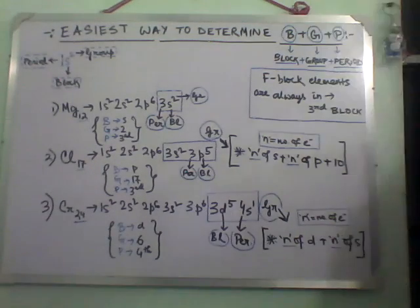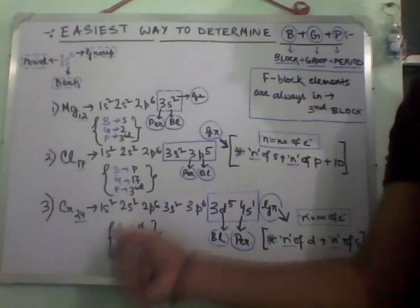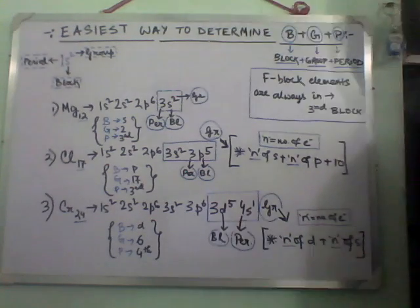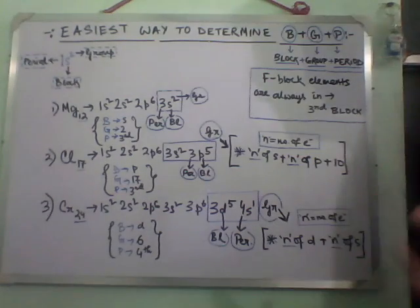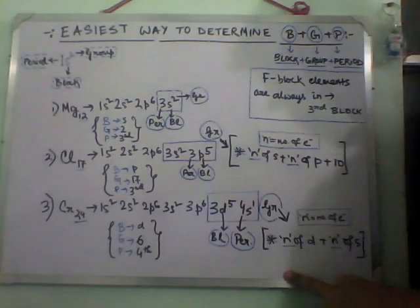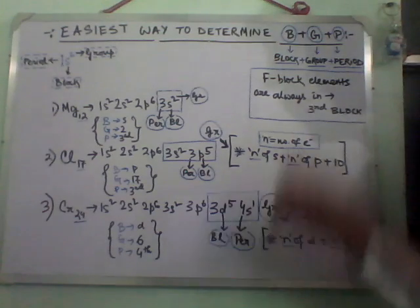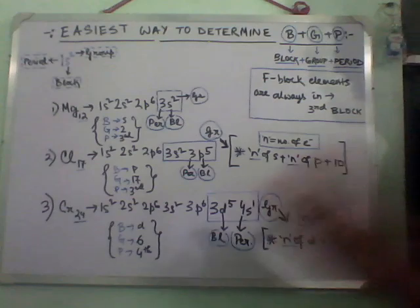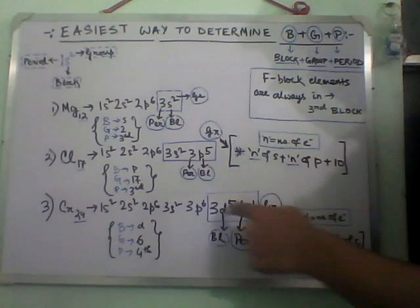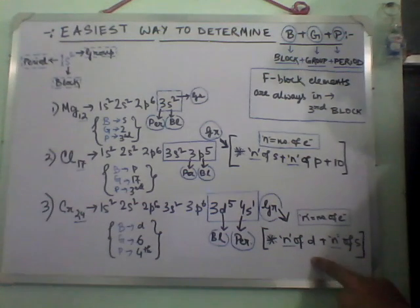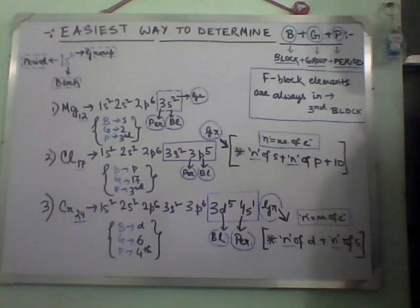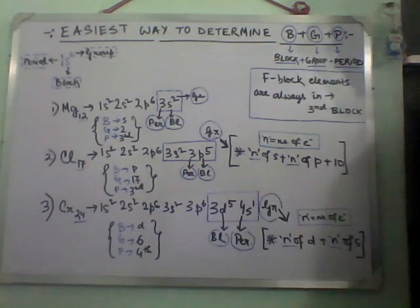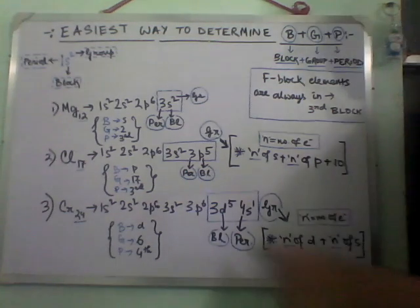Now the third example: chromium, atomic number 24. Electronic configuration: 1s2 2s2 2p6 3s2 3p6 3d5 4s1. Here is another trick for d-block elements. To find the group, when d and s appear at the last, just add the electrons of d and s — no plus 10, nothing extra. Electrons of d plus electrons of s: that's all. The block will always be d when d comes at the last.